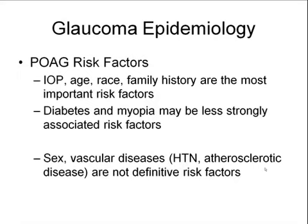The risk factors for POAG should be very familiar and documented on each new patient glaucoma exam. The primary risk factors are IOP level, age, race, and family history. More weakly associated risk factors include diabetes and myopia. Sex and vascular diseases — hypertension and atherosclerotic disease — are not definitive risk factors; however, in many large epidemiological studies there has been a trend toward higher prevalence in males, and the relationship with hypertension is complex — it may be somewhat protective early on but more detrimental later in the disease.